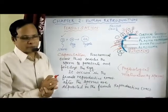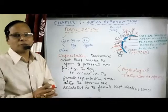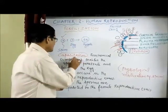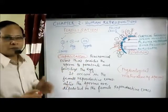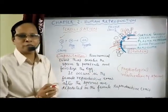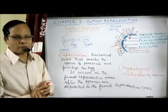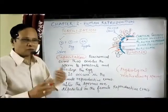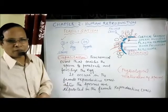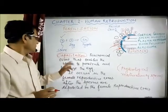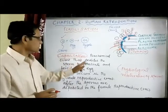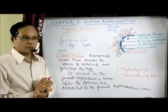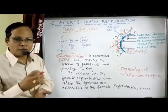When sperms are deposited in the female reproductive tract, they undergo a process called capacitation. Capacitation is the physiological maturation of sperm in the female reproductive tract. More precisely, it is the biochemical event that enables the sperm to penetrate and fertilize the egg, occurring in the female reproductive tract.